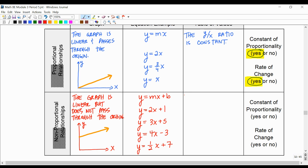And then for a table, the y over x ratio is not constant. That means it doesn't have a COP, but because it's linear, it does have a rate of change.